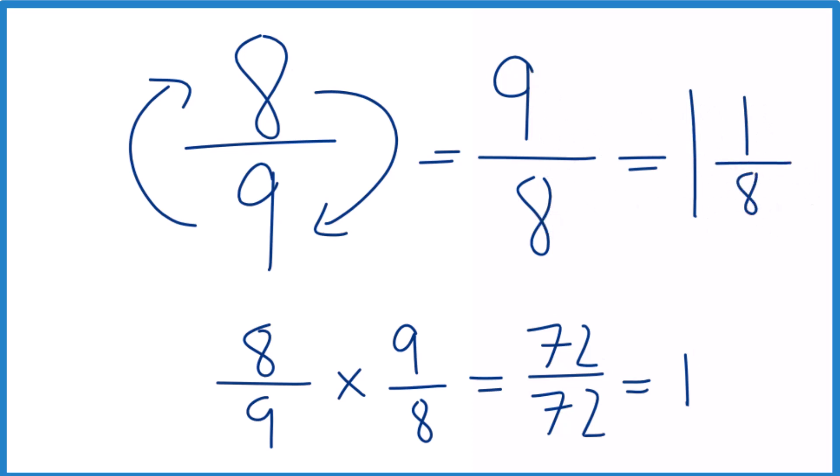So one and one-eighth, that's the same as nine-eighths. And you can check that, too. One times eight, that's eight. Eight plus one is nine. Here's our nine. And we just keep the denominator the same.